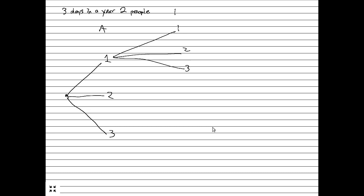So this is person B. Even if person A is born on the first day of the year, person B can still be born on the first day of the year — we're considering all the possibilities right now. We are not yet concerned about probability; I'm just looking at all the possible ways for these two people to arrange their birth dates. We end up with nine possible ways for two people to have birth dates when there are only three days in a year.